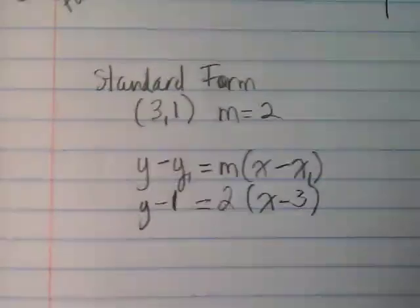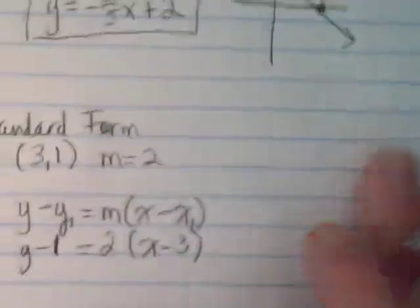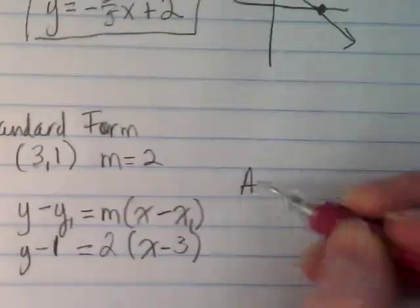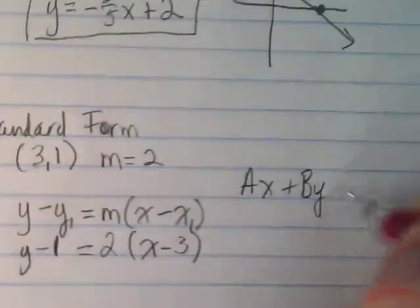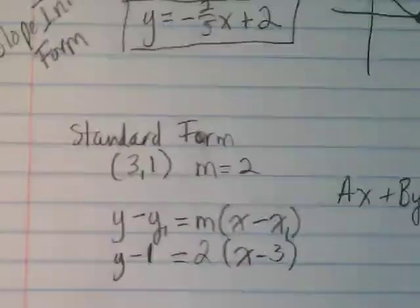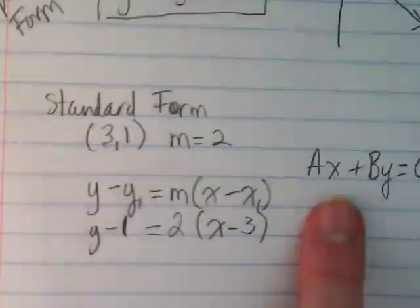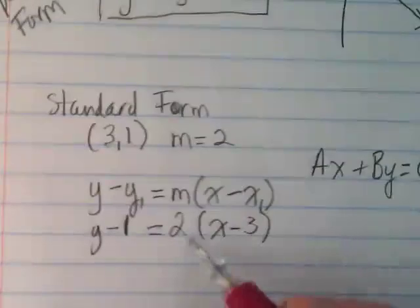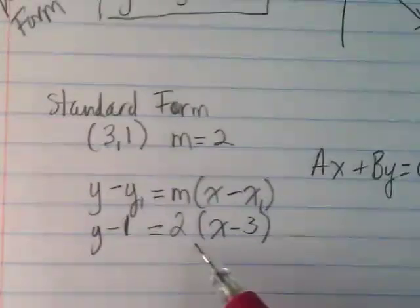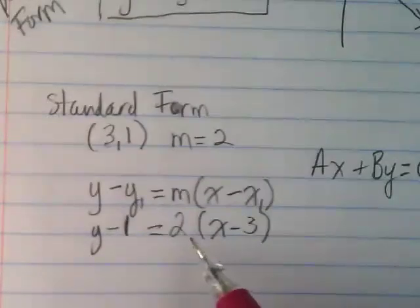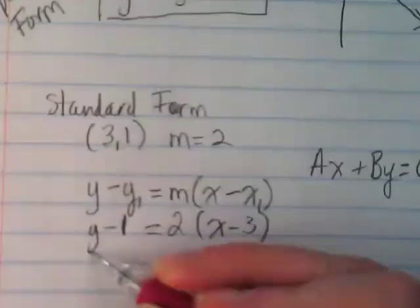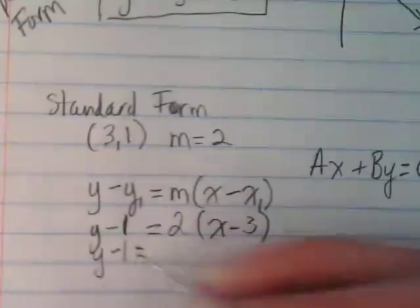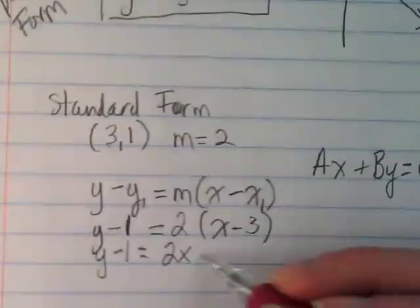To get this to standard form, we're going to try to take it from this to be ax plus by equals c. That's the form we want to get it to. Right now we have it in point-slope form. So first thing we want to do is distribute. What are we going to distribute? The 2. So I'm going to write the left side down just as it is. And then I get 2x minus 6.